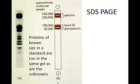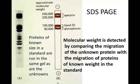Proteins of known size in a standard are run in the same gel as are the unknowns. It's important to run those in the same gel in a different lane. Molecular weight is detected by comparing the migration of the unknown protein with the migration of proteins of known weight in the standard.